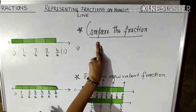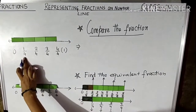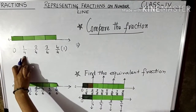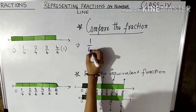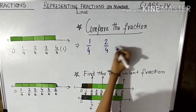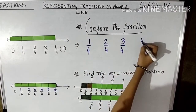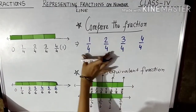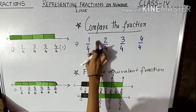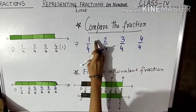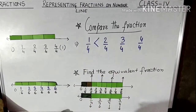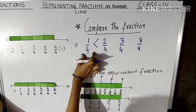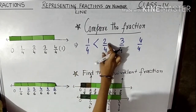Now, how will you compare fractions? If the denominator is the same, we compare the numerators. The lesser the numerator, the smaller the fraction value. If the numerator is bigger, then that fraction is greater. For example, 2 is lesser than 3, so 2/4 is less than 3/4.